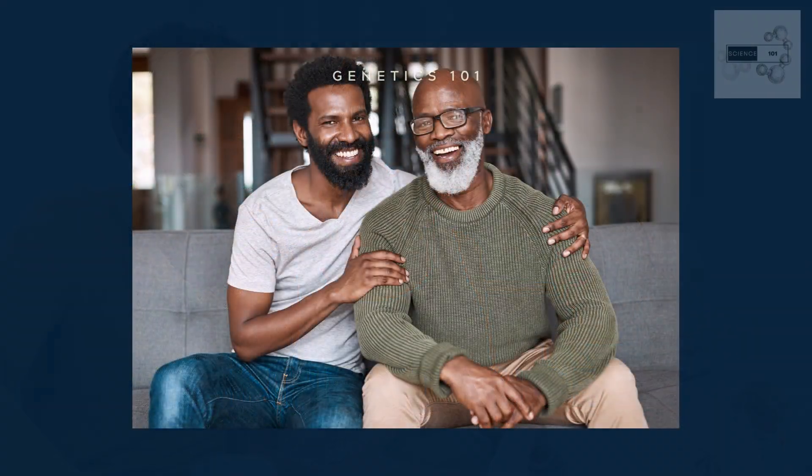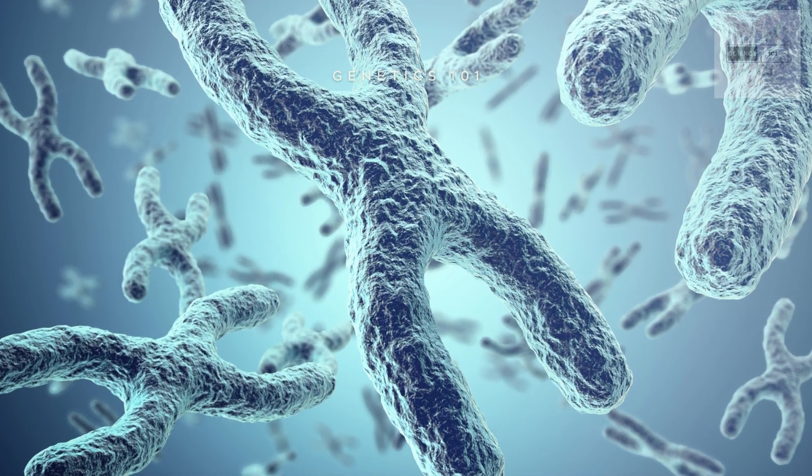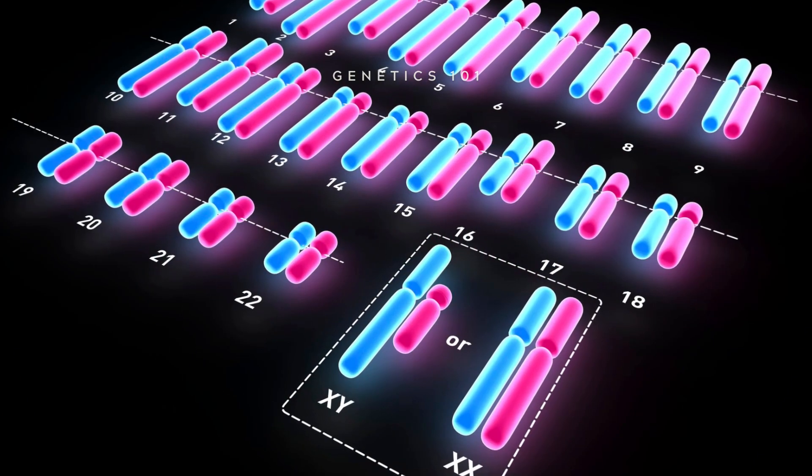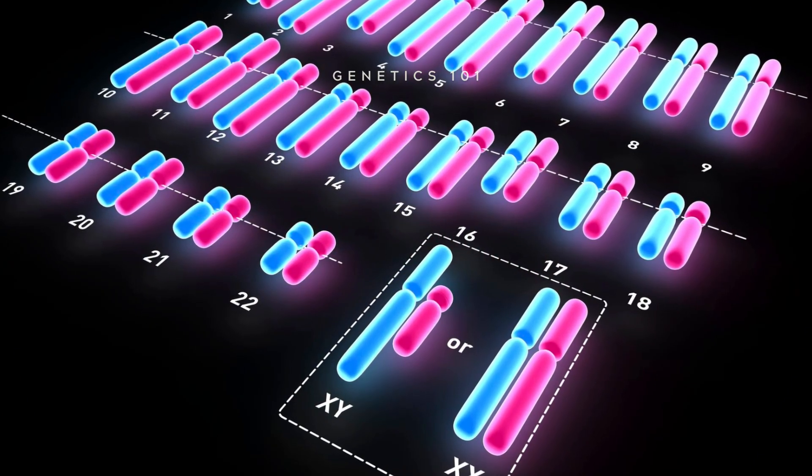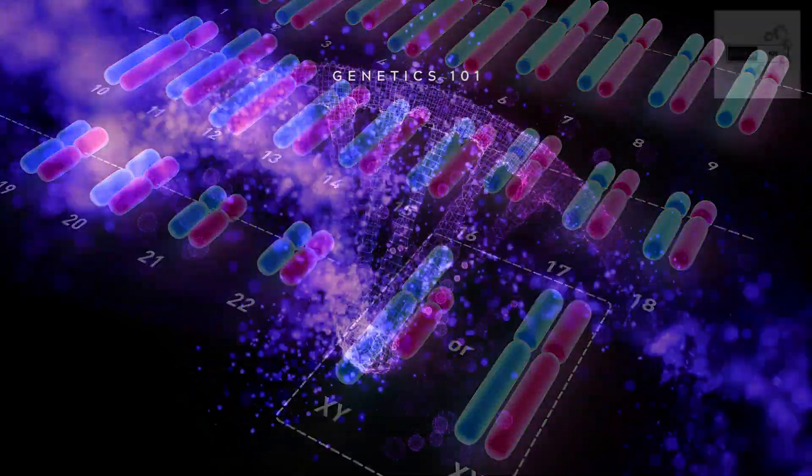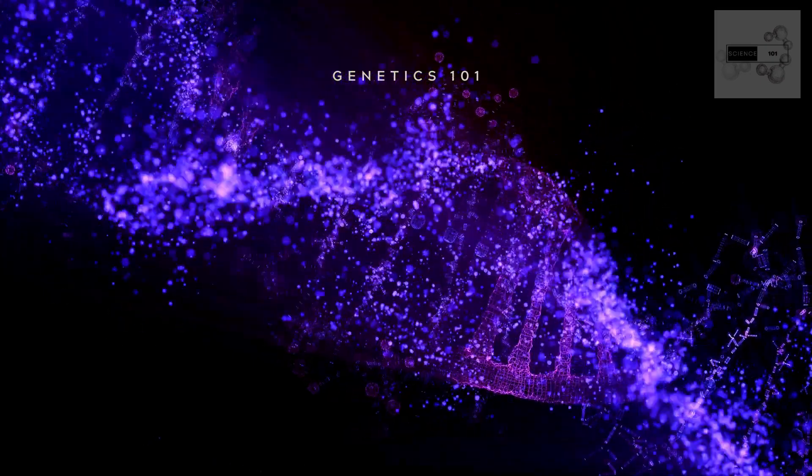Inheritance is the process by which traits are passed down from parents to their offspring. In humans, this occurs through the transfer of genetic material from the mother and father to their offspring. Each human cell contains 23 pairs of chromosomes, with one set inherited from each parent. These chromosomes carry genes, which are the units of heredity responsible for the expression of traits.